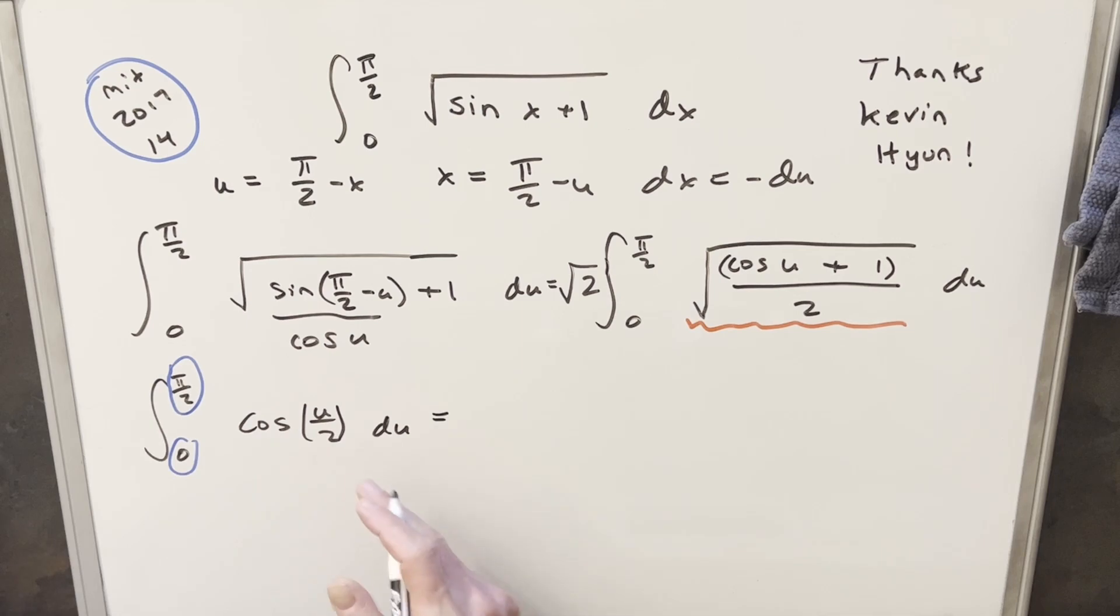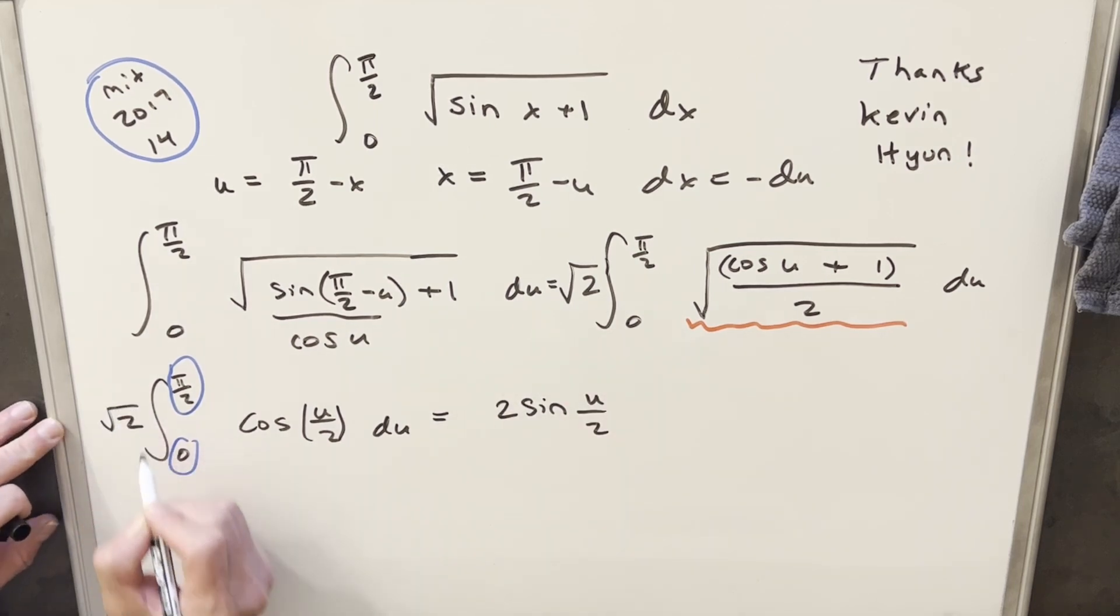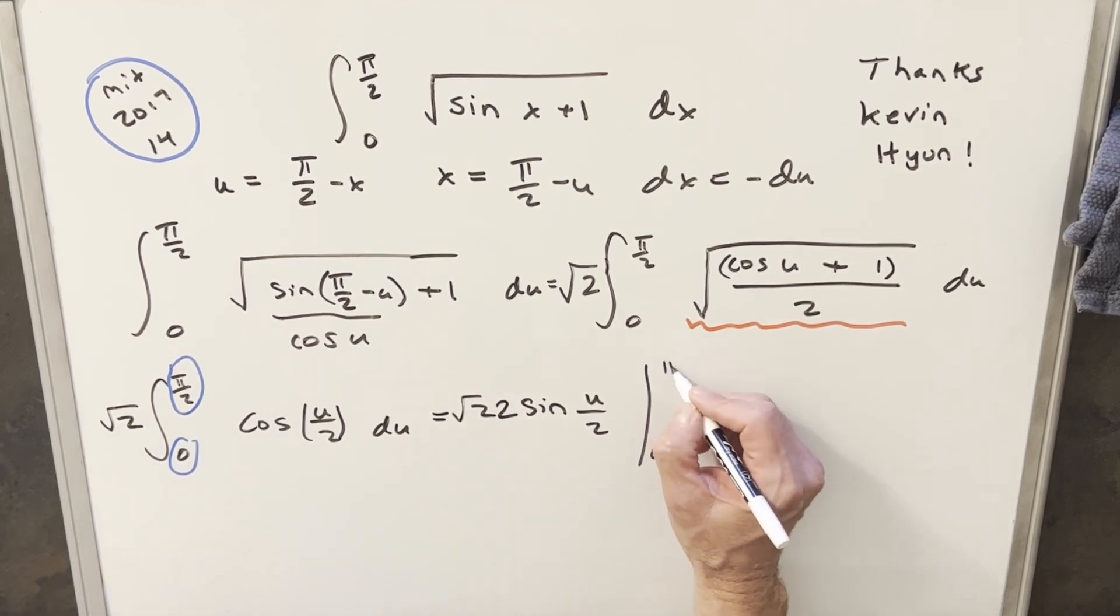But now this is going to be really easy to integrate. Integral of cosine u over 2 is just going to give me sine of u over 2. But let's not forget the 2 in the denominator, so we'll bring a 2 out front here. And then also I get that square root of 2 that I forgot, so let's bring that square root of 2 back right there.